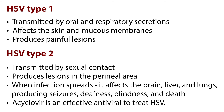HSV type 1 is transmitted by oral and respiratory secretions, affecting the skin and mucous membranes and producing painful lesions. HSV type 2 is transmitted by sexual contact, producing similar lesions but in the perineal area. When the infection spreads, it affects the brain, liver, and lungs, producing seizures, deafness, blindness, and death. Acyclovir is an effective antiviral to treat HSV.